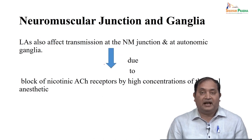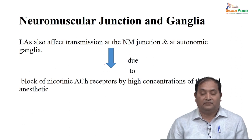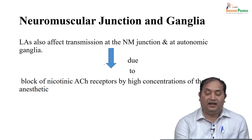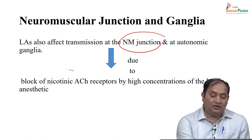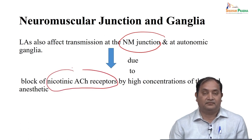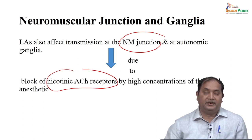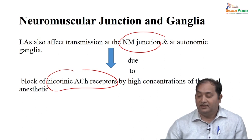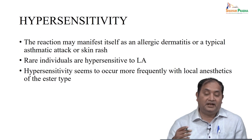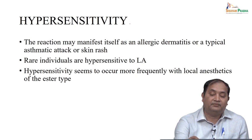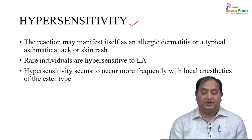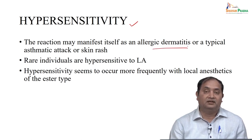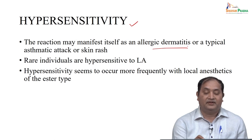Coming to action on neuromuscular junction and ganglia: local anesthetics affect neuromuscular junctions and autonomic ganglia because they block nicotinic acetylcholine receptors at higher concentrations. This is seen when a higher dose is given. When selecting a local anesthetic, you need to take an allergy history because some hypersensitivity reactions occur, manifesting as allergic dermatitis, asthmatic attacks, or skin rashes when applied locally.